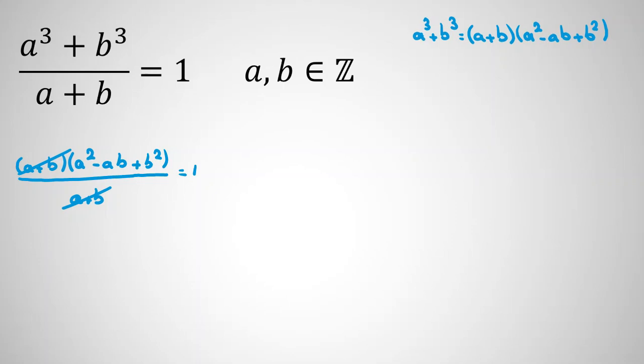Because A plus B is in the denominator, we can cancel. If you cross multiply, A plus B is on both sides of the equation. You can divide when A plus B is not zero.